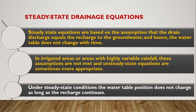The steady-state equations are based on the assumption that drain discharge equals the recharge to the groundwater — both discharge and recharge are equal. Hence the water table does not change with time. Such equations are known as steady-state drainage equations. In irrigated areas and highly rainfall areas the discharge and recharge may not be equal, so in that case we can use unsteady-state equations.